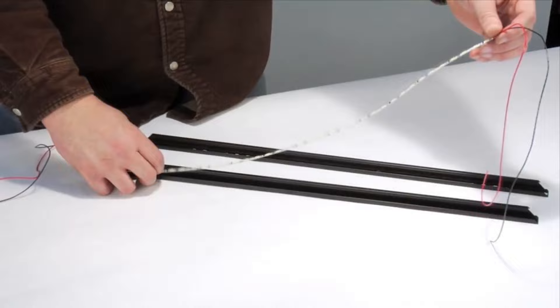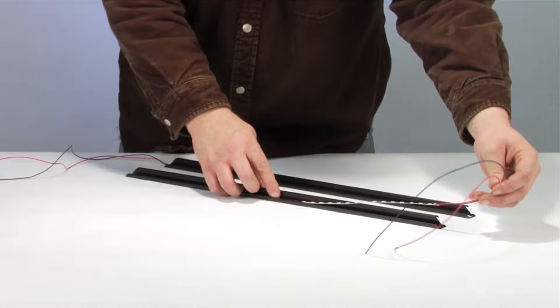Remove the liner on the thermally conductive tape from the LED strips and securely press them onto the two longest sides of the frame.